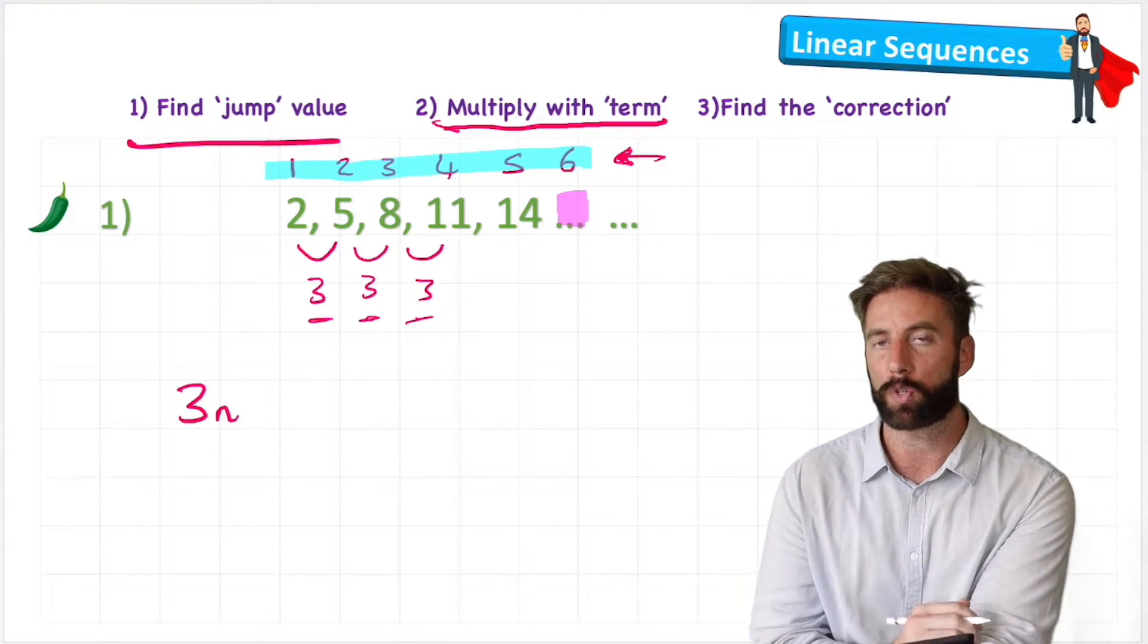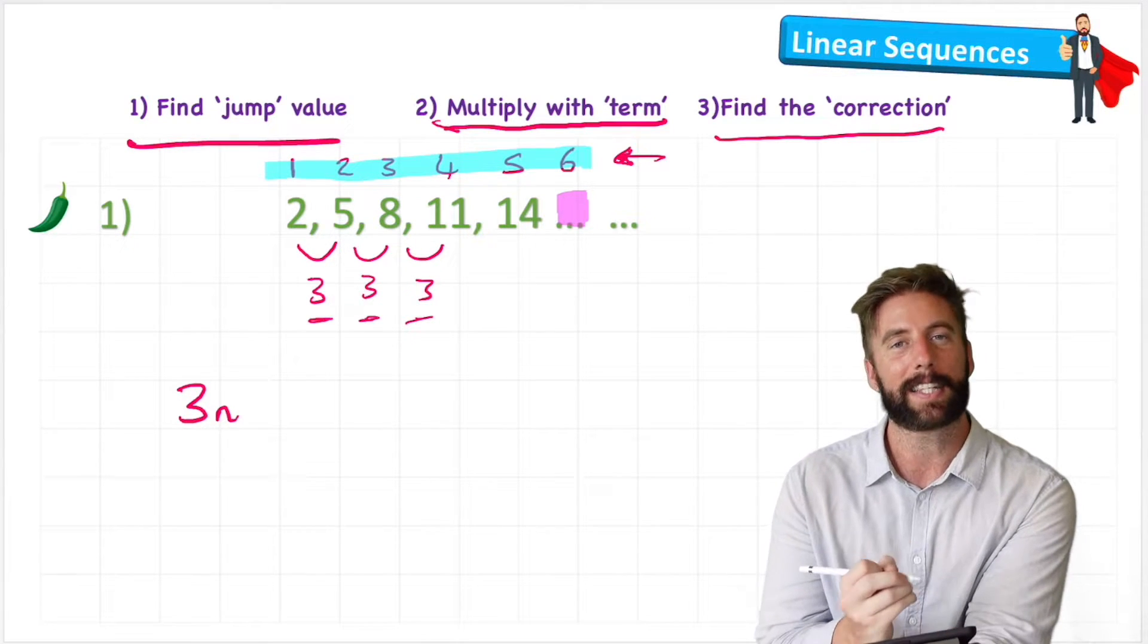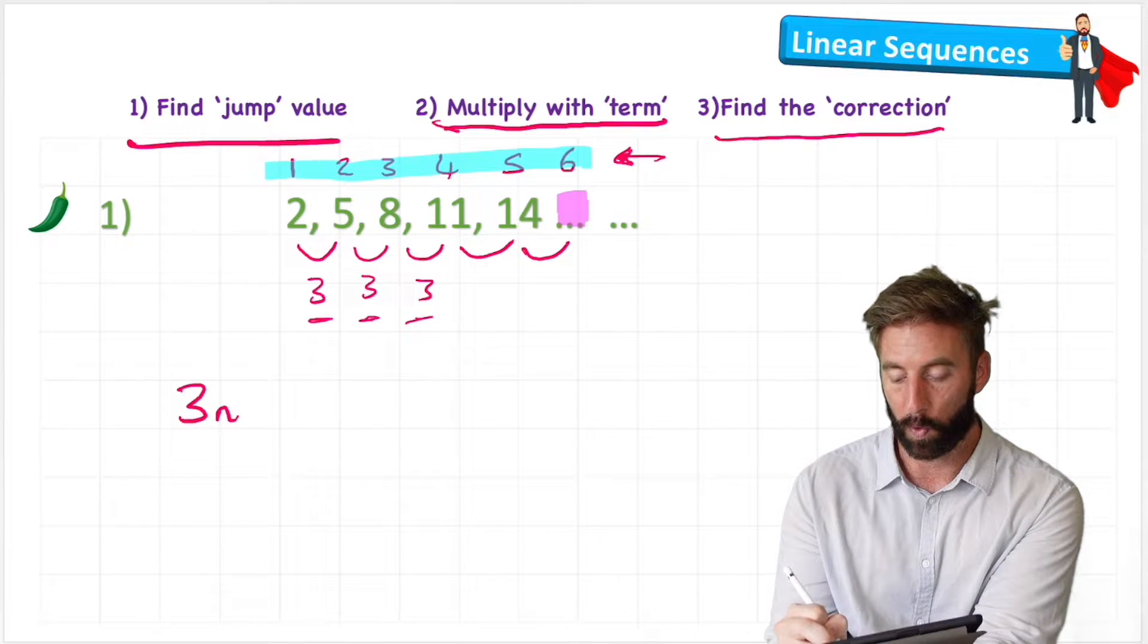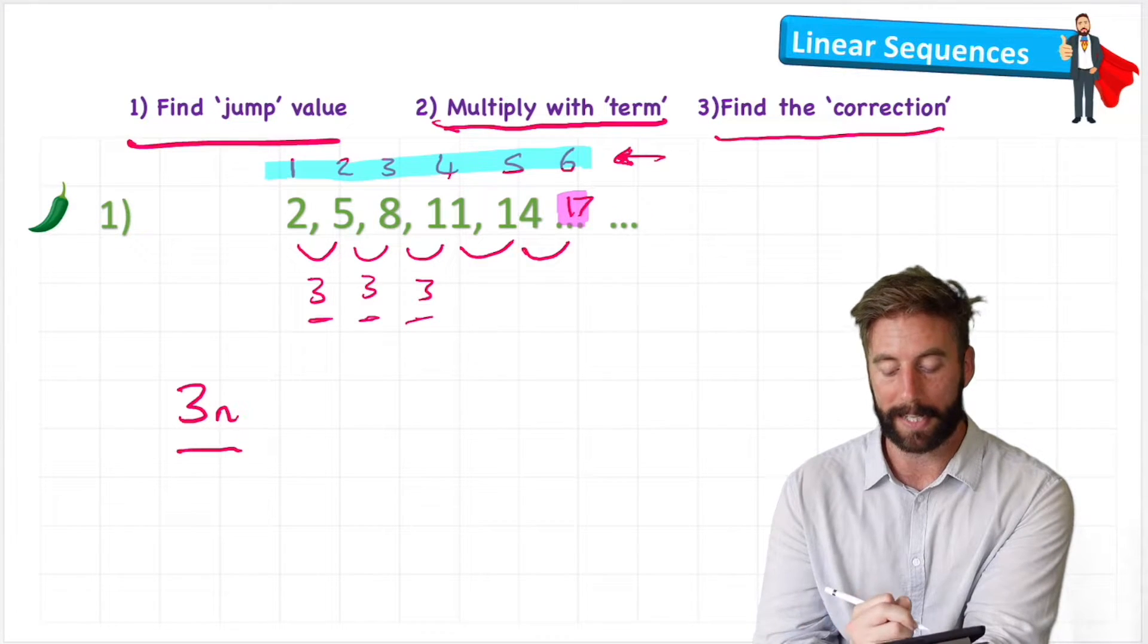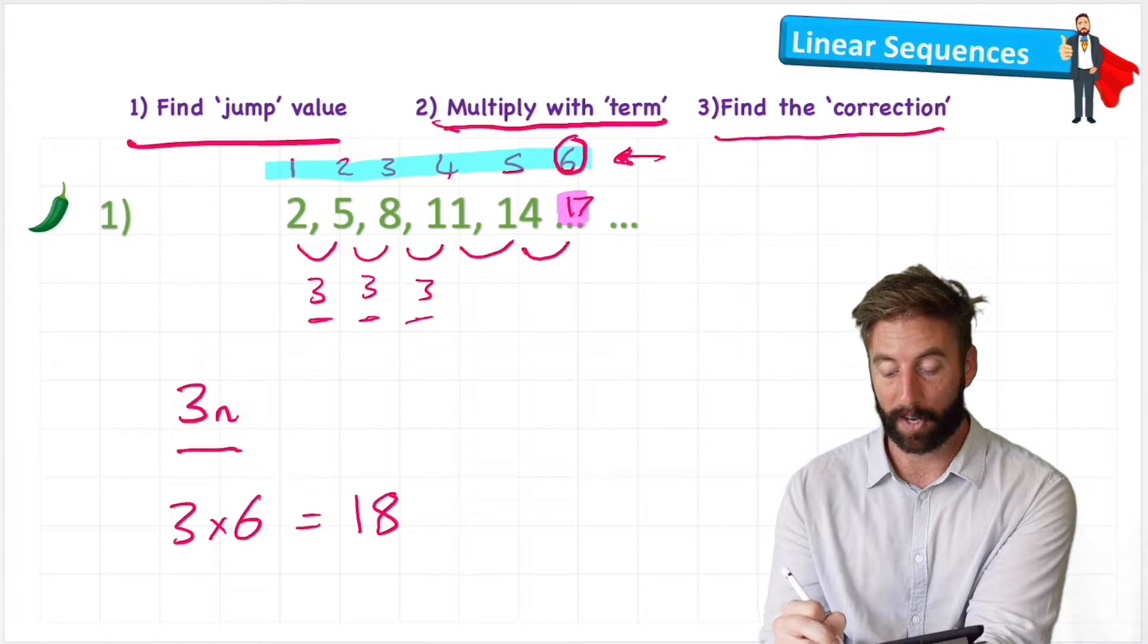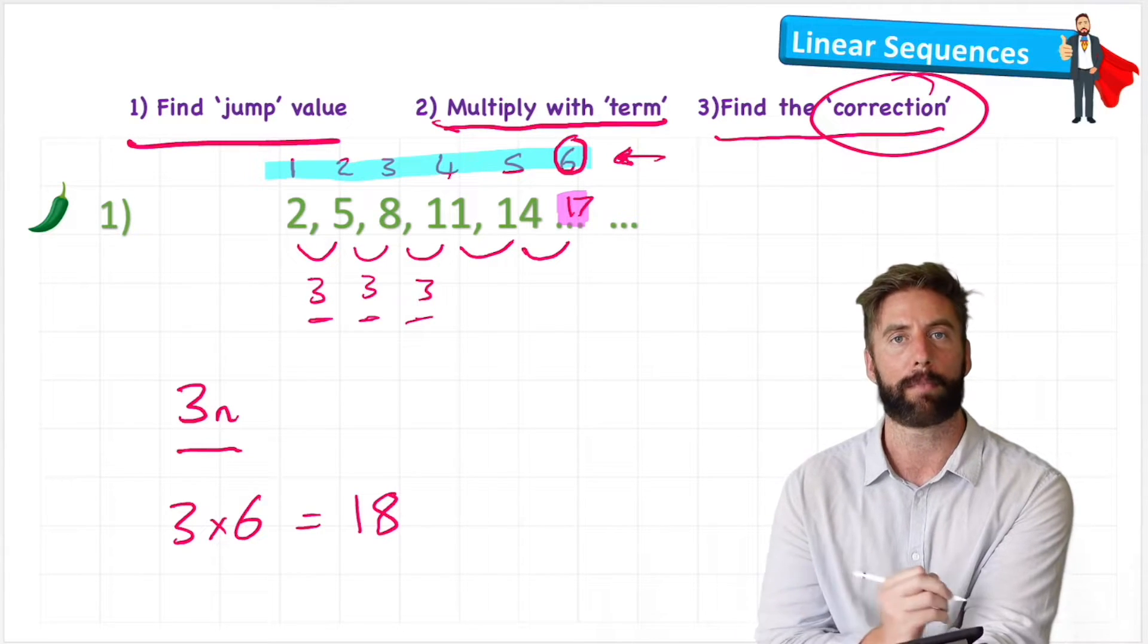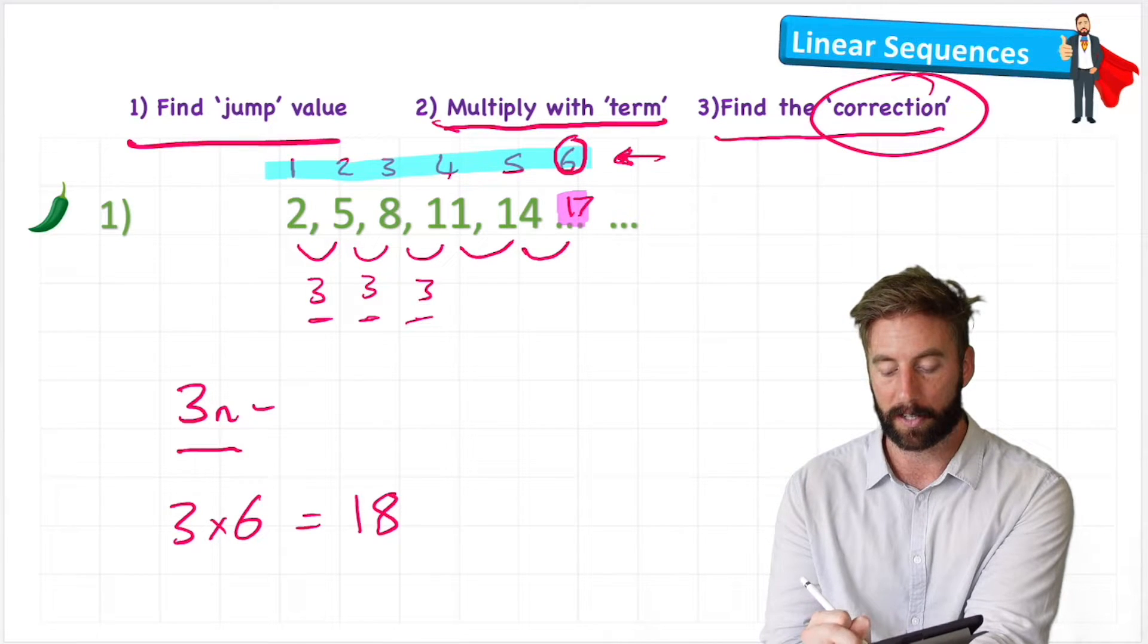But like I say, that's going to be close to our number but not bang on. So then we need to find the correction. We know that the next number after 14 will be 17. But so far, all I've got in my formula is 3n, so 3 times the number value, which is 6. If I do 3 times 6, I get 18. 18 is very close to 17, but not quite right. So I need to correct my formula. How can I get from 18 down to 17? Well, I can minus 1.